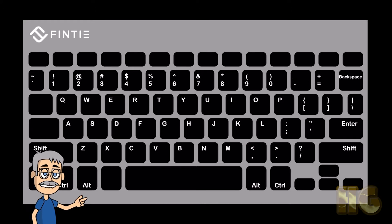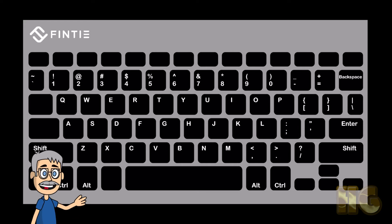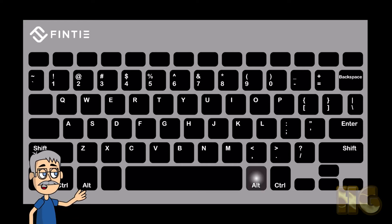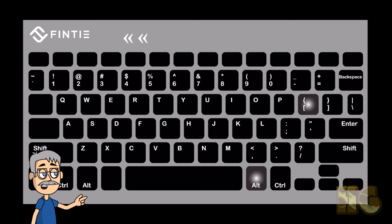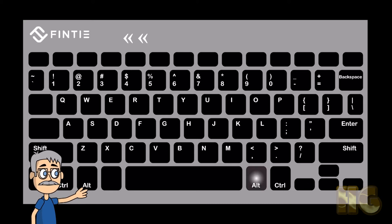You will find the French quotes by hitting together the right ALT and the square bracket. Right ALT plus the left square bracket for the left quote, and right ALT plus the right square bracket for the right quote.